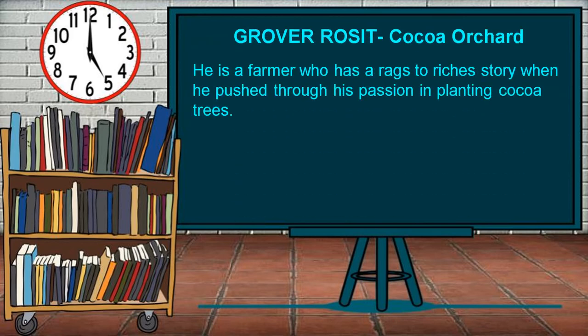Grover Rosette is a farmer who has a rags-to-riches story when he pushed through his passion for planting cocoa trees. He never expected that these cocoa trees would give him a comfortable life. Before engaging in planting cocoa trees, he was a postman receiving a moderate wage. Now, he is earning 50 times more than his previous job. He began his cocoa orchard by managing 50 trees, which eventually increased to 100 trees, then 3,000 trees, and now with 15,000 more scattered in different places.